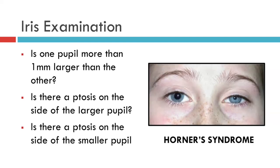If there is a ptosis — a droopy eyelid — on the side of the smaller pupil, such as in this patient, you need to look for a cause of Horner's syndrome, which may be due to a lesion in any part of the sympathetic pathway from the hypothalamus, down past the neck, to the apex of the lung and back up into the eye.